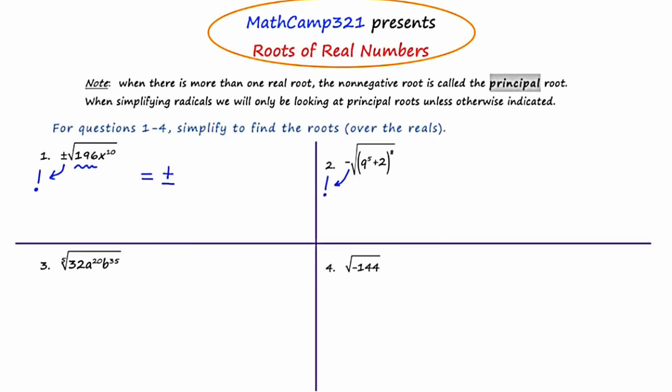What number times itself is 196? The answer is 14, so the square root of 196 is 14. Now focusing on x to the tenth — what monomial times itself gives us x to the tenth? That's going to be x to the fifth. x to the fifth times x to the fifth is x to the tenth. So the answer here is plus or minus 14x to the fifth. The plus or minus is there merely because it's there at the beginning of the problem.